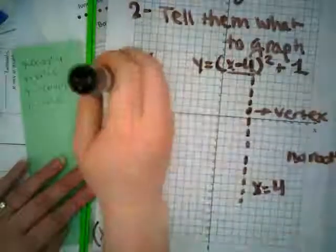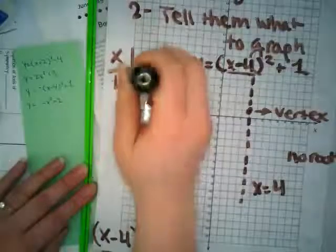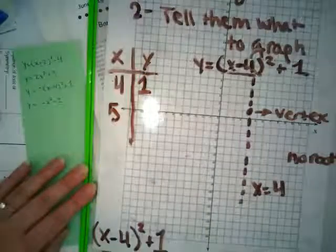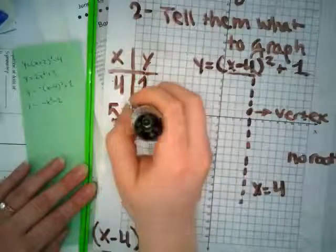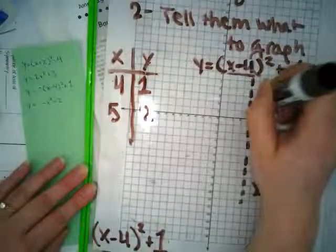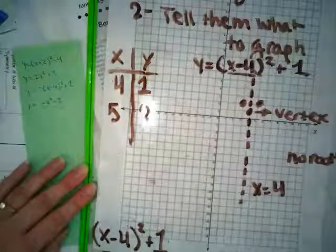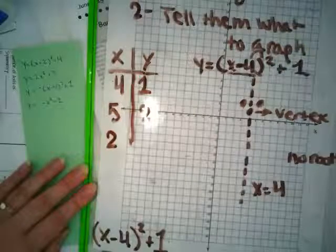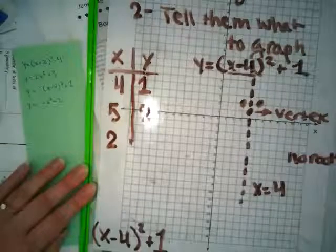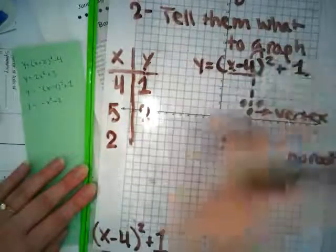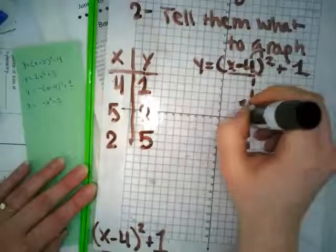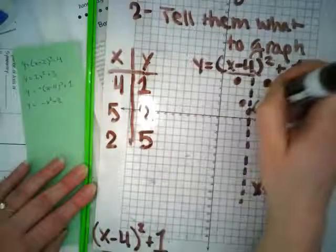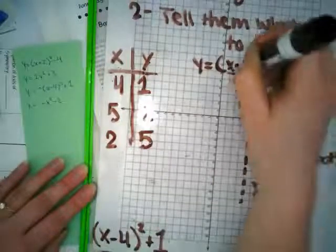And I'm going to start plugging in some points. Because I know if I plug in 4, I'm going to get 1. What happens when I plug in 5? I'm going to get 2. So I get 2 on this side and on this side. If I plug in 2 for my x value, what do I get? Do I get 5? 2 minus 4? Yep. I'll get 5. And I get it on this side, too, for when x is equal to 6.